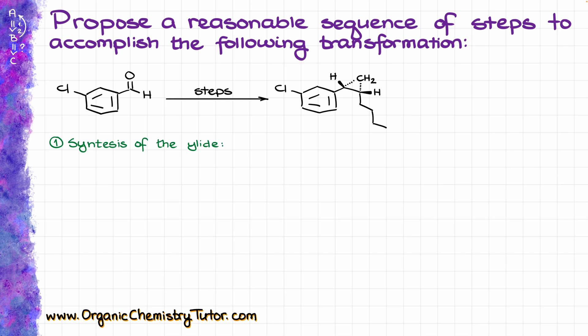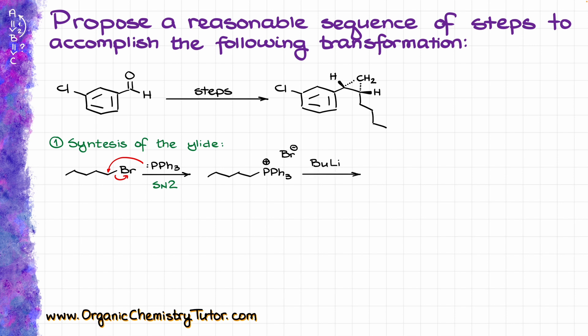The first step in the synthesis is going to be the creation of the ylide. We are working with the non-stabilized ylide, which means that we are going to have to make it right before our Wittig reaction — non-stabilized ylides don't keep well, so we always make them immediately before the reaction. To do that, we take our corresponding alkyl halide, which in this case is 1-bromopentane, and treat it with triphenylphosphine, which undergoes a simple SN2 reaction giving us a salt. Then we treat it with a powerful base — typically butyllithium, though sodium amide, sodium hydride, or similar powerful bases can also work — which gives us our corresponding ylide after removing the proton from the alpha position.